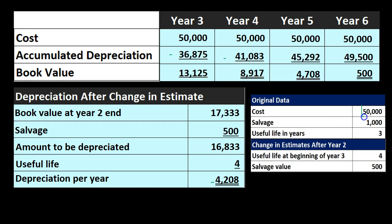We took the book value as of the point in time when we believed the estimate had changed — that being $17,333 — and moved forward with that based on the new information we had. For more accounting information and accounting courses, visit our website at accountinginstruction.info.